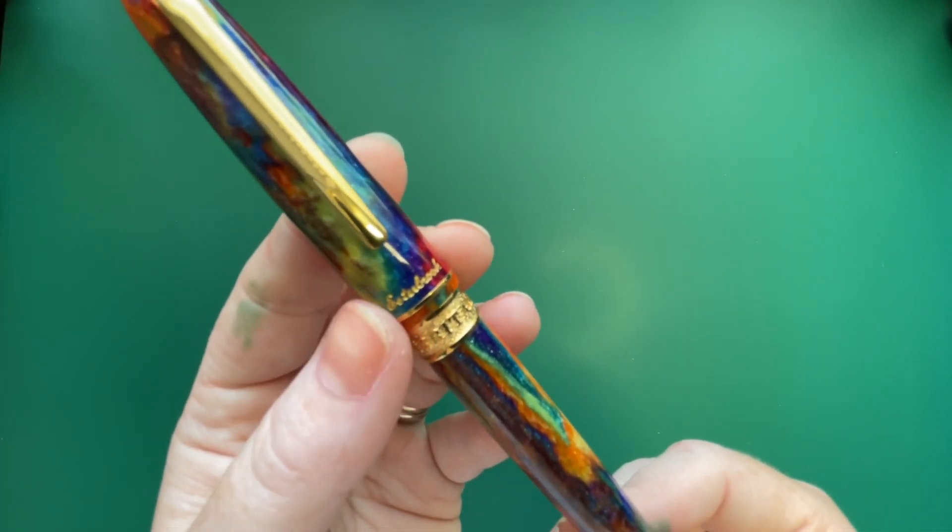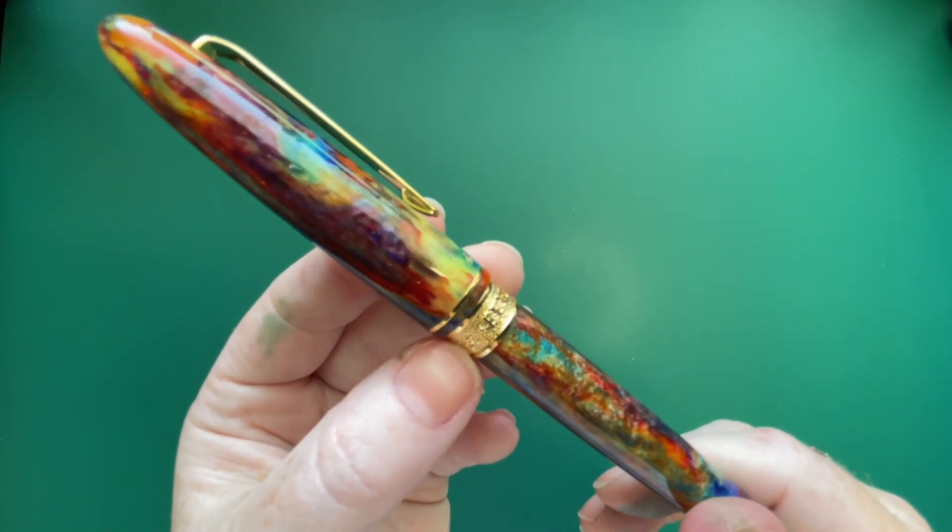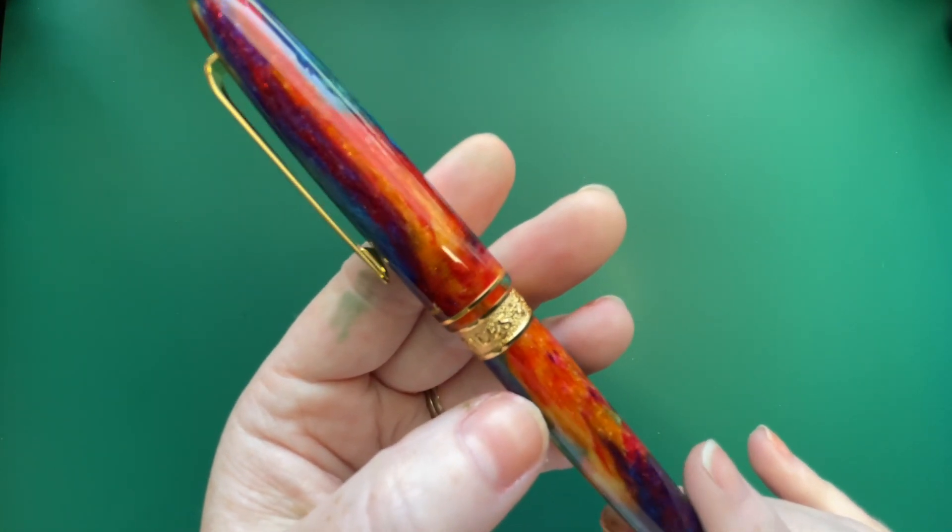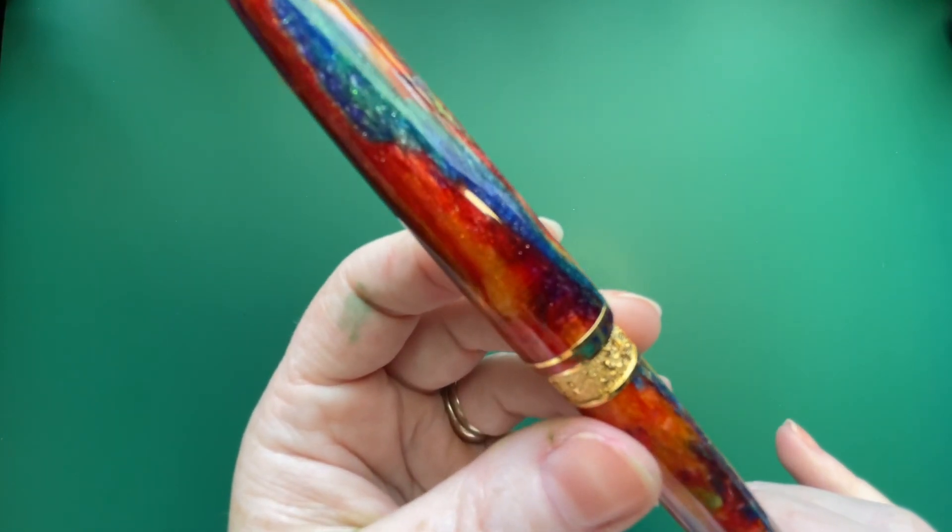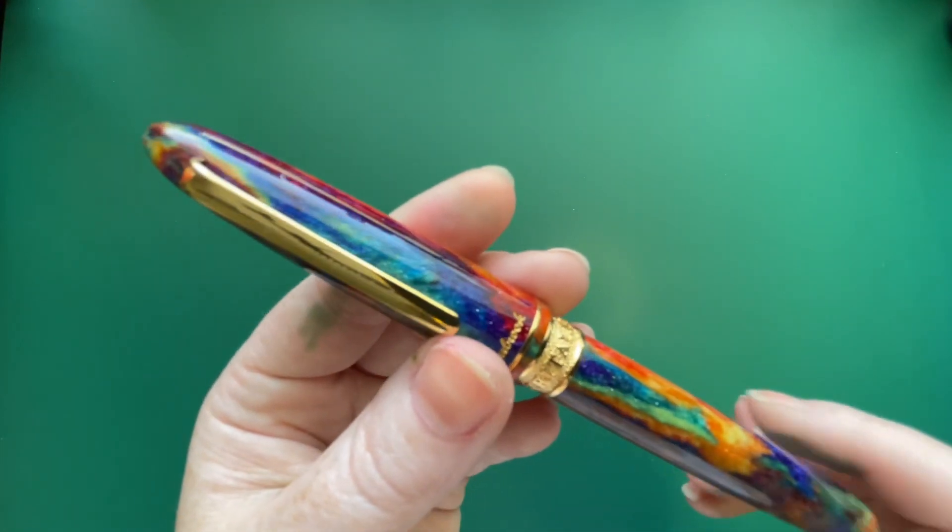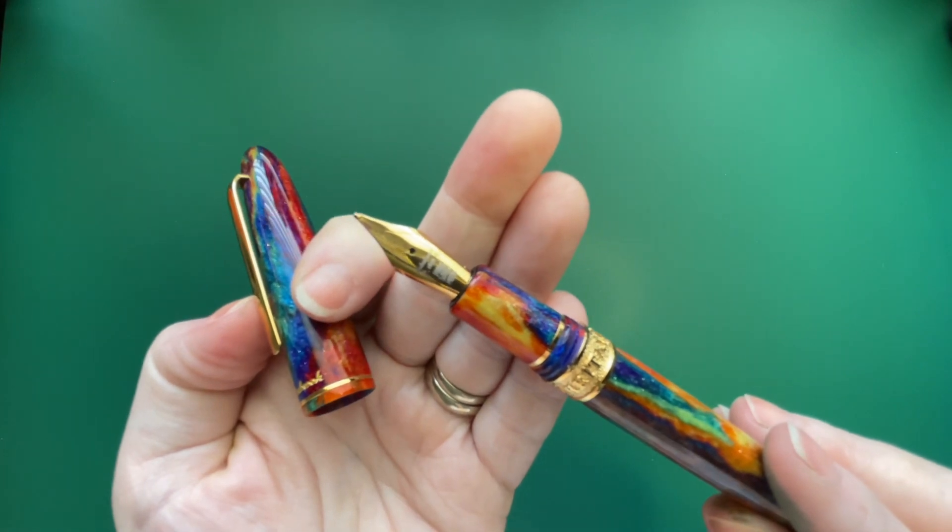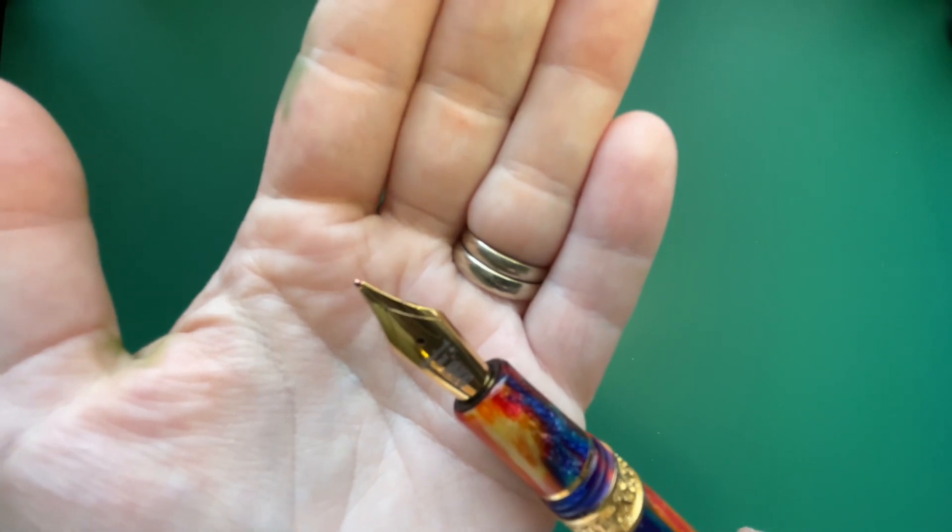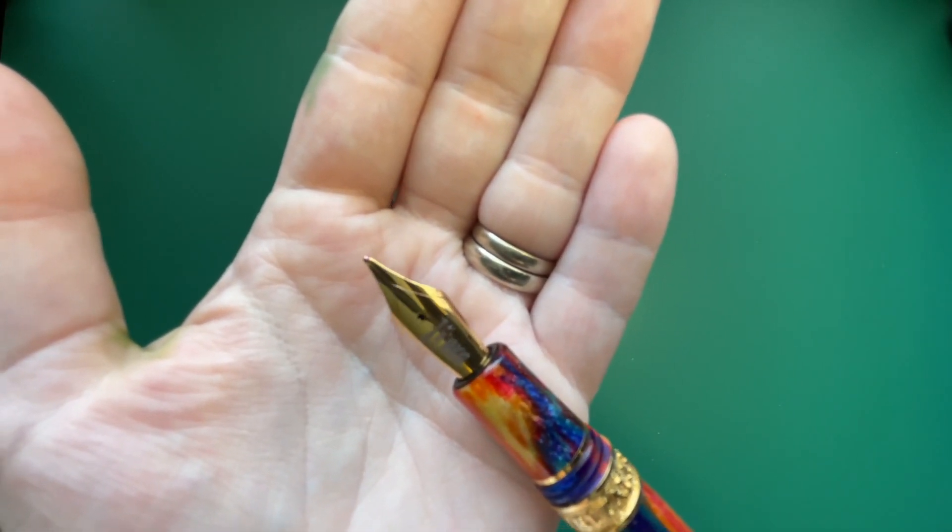It has the Estherbrook logo etched in gold at the end of the cap. And here around the entry to the section, it says Ferris Wheel Press because this is part of the Ferris Wheel line. And it has stars engraved on there as well, embossed, engraved. This is a gold plated nib. And the nib says Estherbrook and it has the date there, and it also says Ferris Wheel Press.